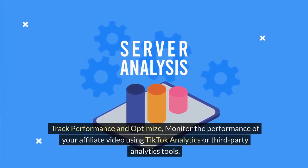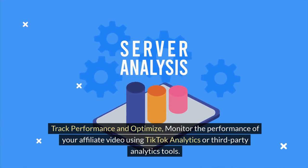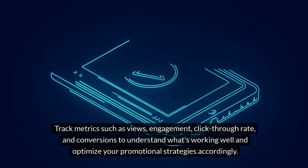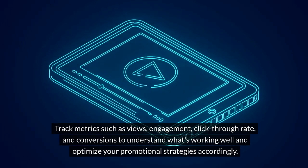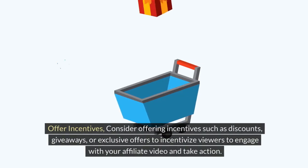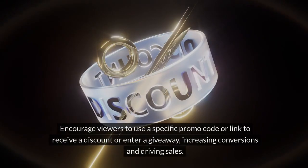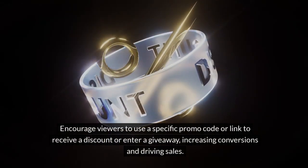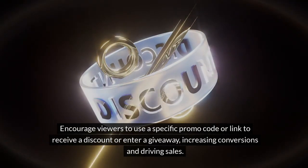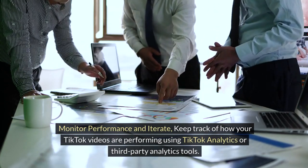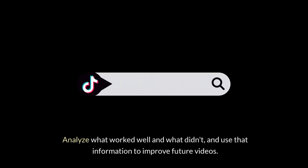Track performance and optimize — monitor your affiliate video using TikTok analytics or third-party tools, tracking metrics such as views, engagement, click-through rate, and conversions to understand what's working and optimize your strategies accordingly. Consider offering incentives such as discounts, giveaways, or exclusive offers to encourage viewers to engage and take action, using a specific promo code or link to increase conversions. Keep track of how your videos are performing, analyze what worked well and what didn't, and use that information to improve future videos.